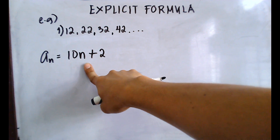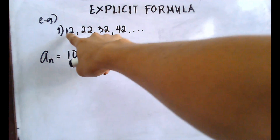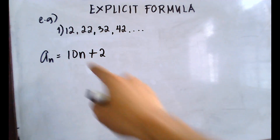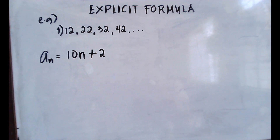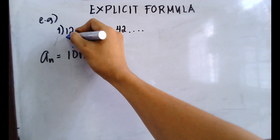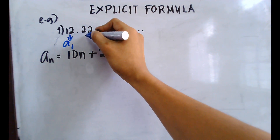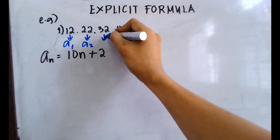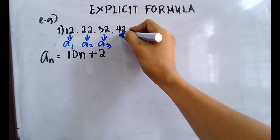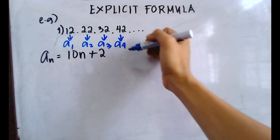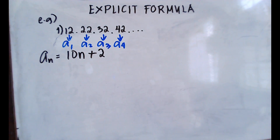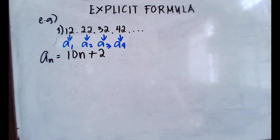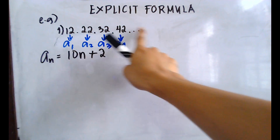Let's check if this explicit formula is correct by substituting values of n. In this sequence, 12 is a sub 1, 22 is a sub 2, 32 is a sub 3, and 42 is a sub 4. Let's use the explicit formula to find specific terms and verify.